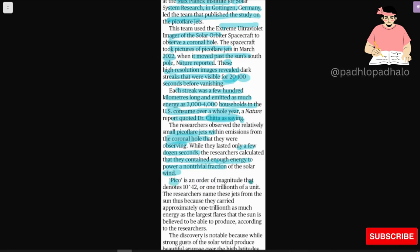Pico is an order of magnitude that denotes 10 to the power minus 12, or one trillionth of a unit. The researchers named these jets from the sun thus because they carried approximately one trillionth as much energy as the large flare that the sun is believed to be able to produce.